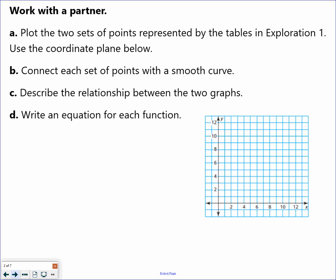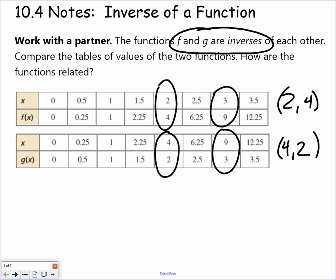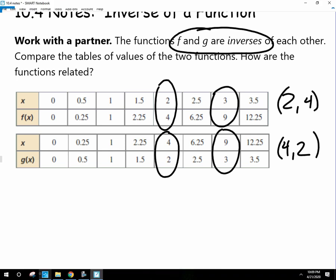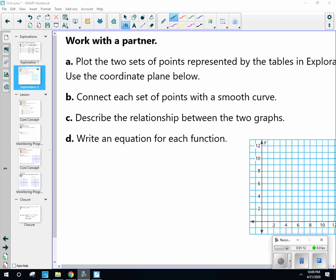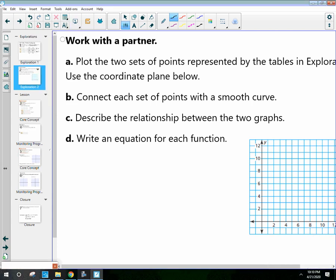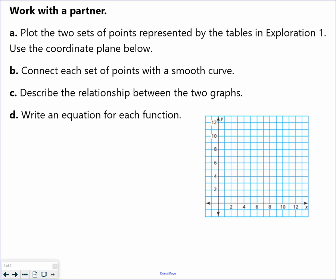I'm going to plot some of those points here just to give you a visual as to what's happening here. So I apologize for that, got interrupted there. So I'm going to plot the points from the first screen. So we got, and I'll do them in different colors to make things a little bit easier. So we got 0, 0, 0.5, 0.25. So right here, 1, 1, 1.5, 2.25, 2, 4, 2.5, 6.25, 3, 9, and 3.5, 12.5. Okay, so there's the first one.